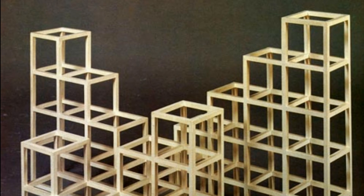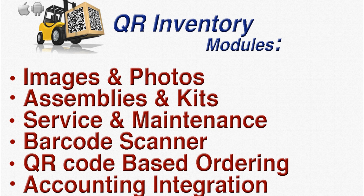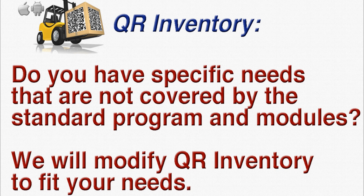Need more functionality? QR Inventory has a module structure — pay only for what you need. As of January 2016, QR Inventory has six additional modules: images and photos, assemblies and kits, service and maintenance, barcode scanner, QR code-based ordering, and accounting integration. Do you have specific requirements not covered by the standard program and modules? We will modify QR Inventory to fit your needs.